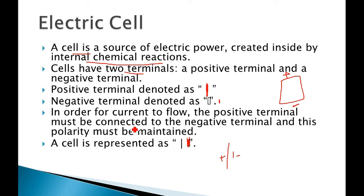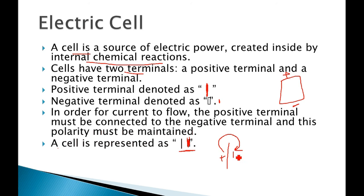Now, in order for current to flow, the positive terminal must be connected to the negative terminal. So to make current flow, the positive terminal should be connected to the negative terminal, and this polarity difference must be maintained. So a cell is represented with a bigger line for positive and a smaller line for negative.